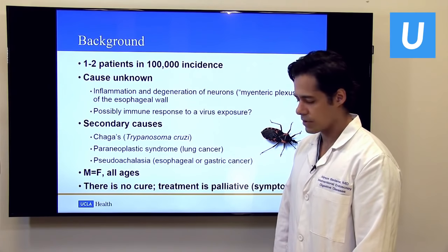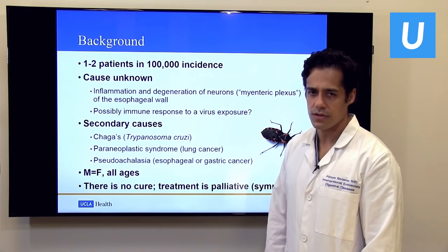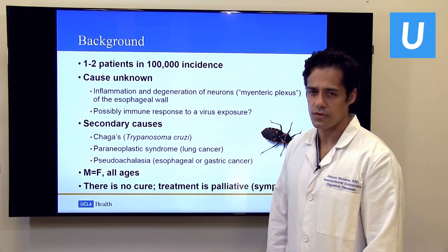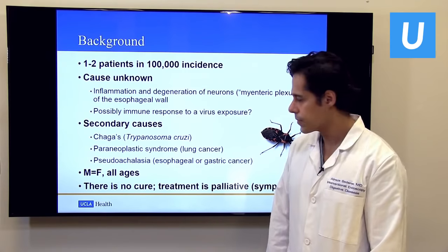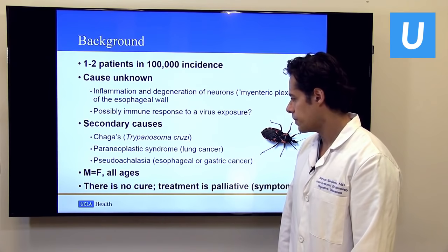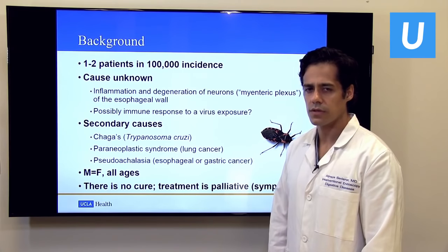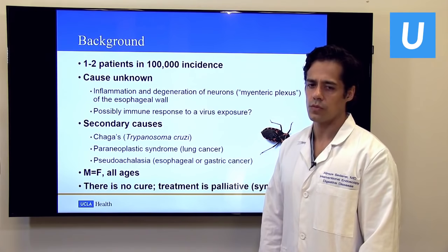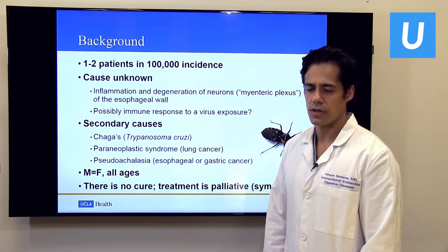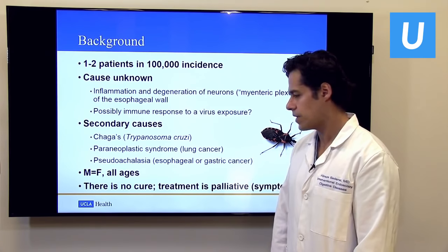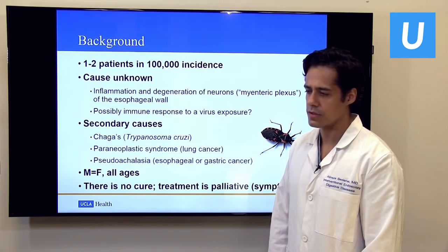Males and females are affected equally. It affects all ages, as young as toddlers — the oldest patient I've seen was 94. There's no cure, meaning we can't make the motility or muscle go back to normal, but we can do a lot to fix the symptoms and get you back to a very close to normal quality of life.